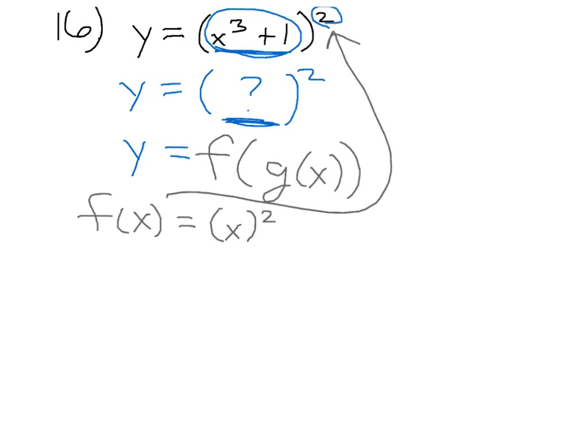So what's being squared in this case, that inner layer, is what we'll call g of x. The guts here was x cubed plus 1.